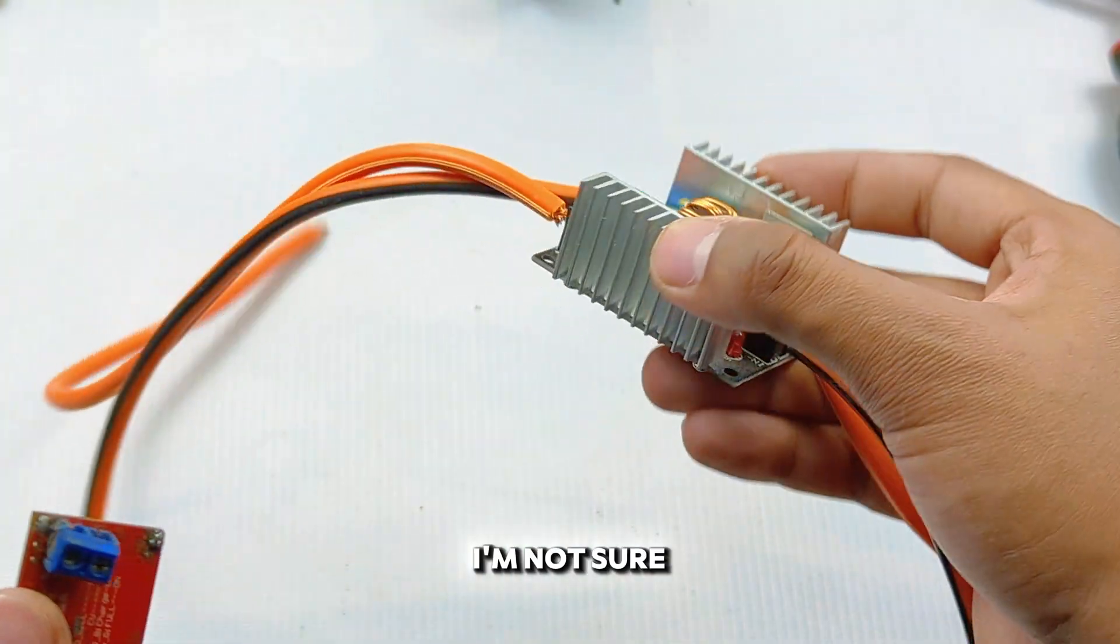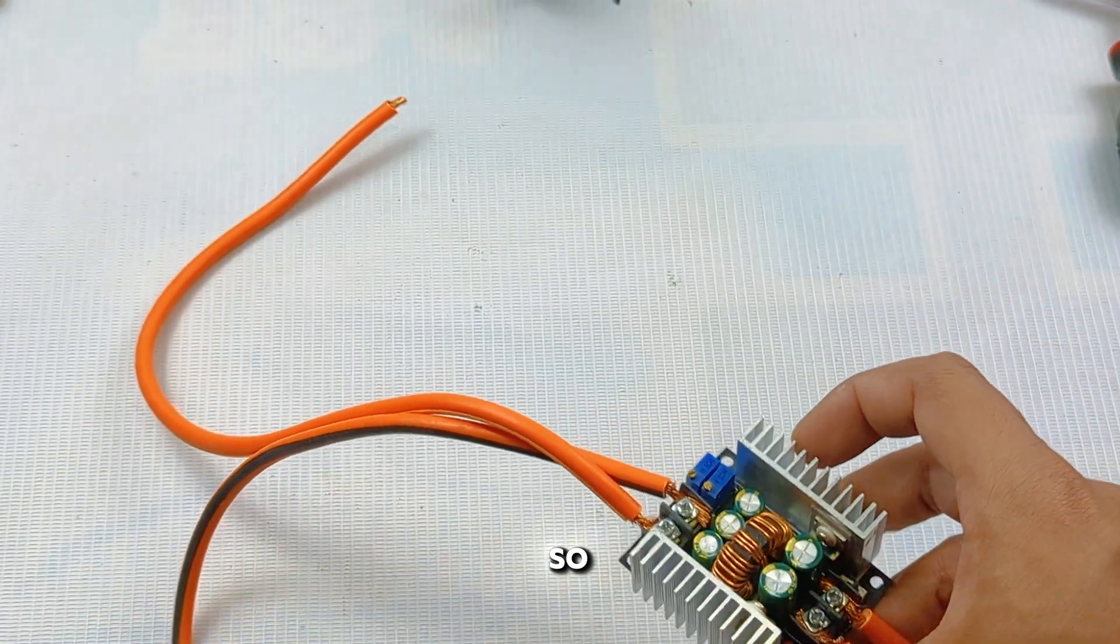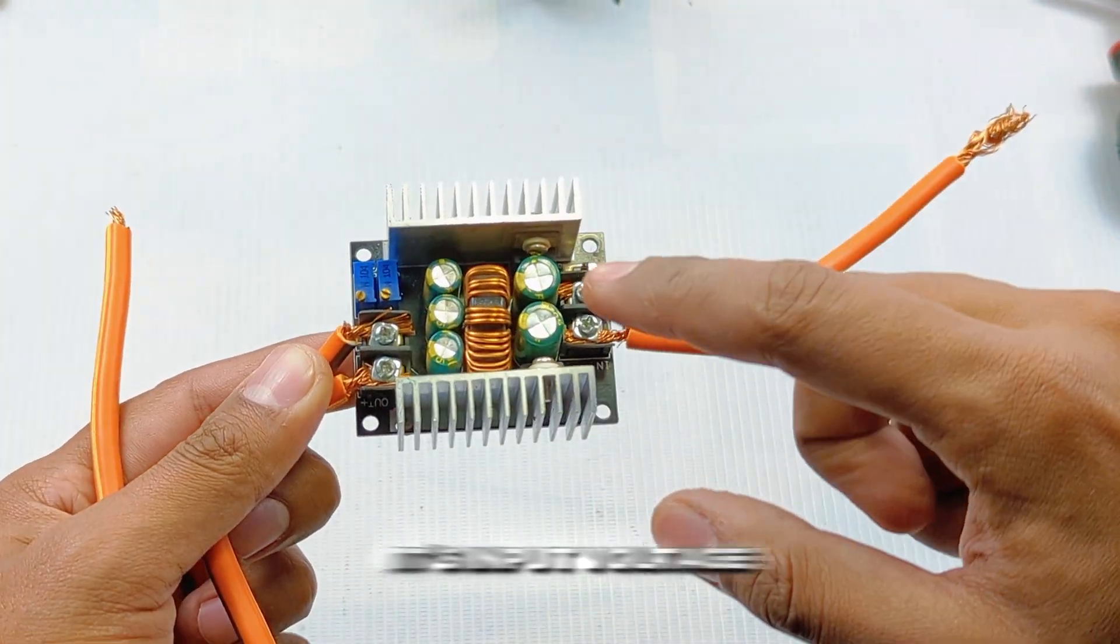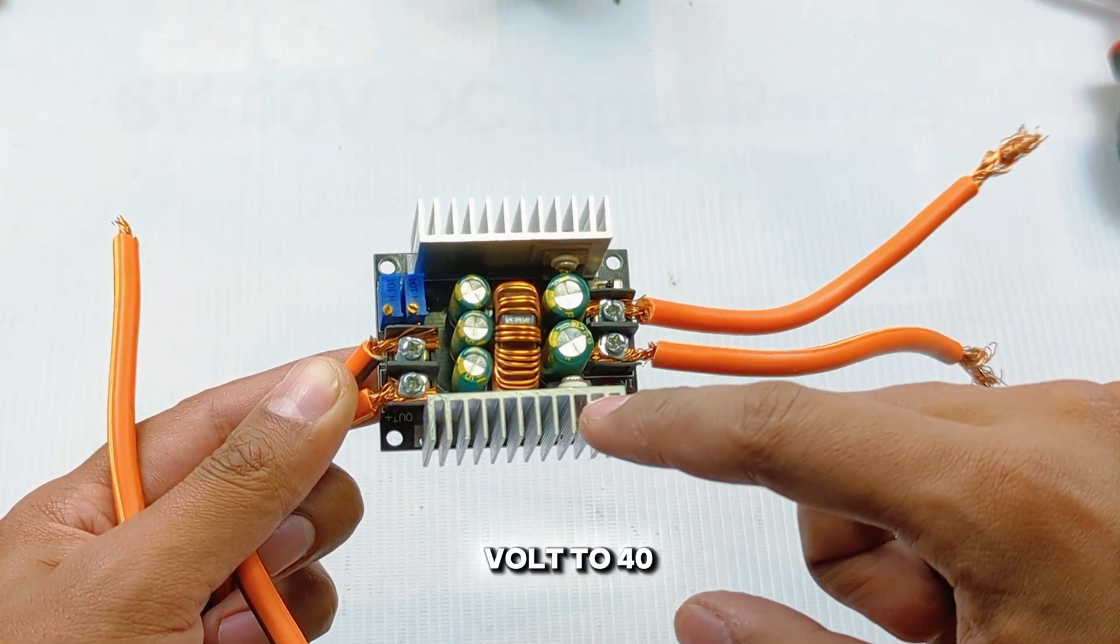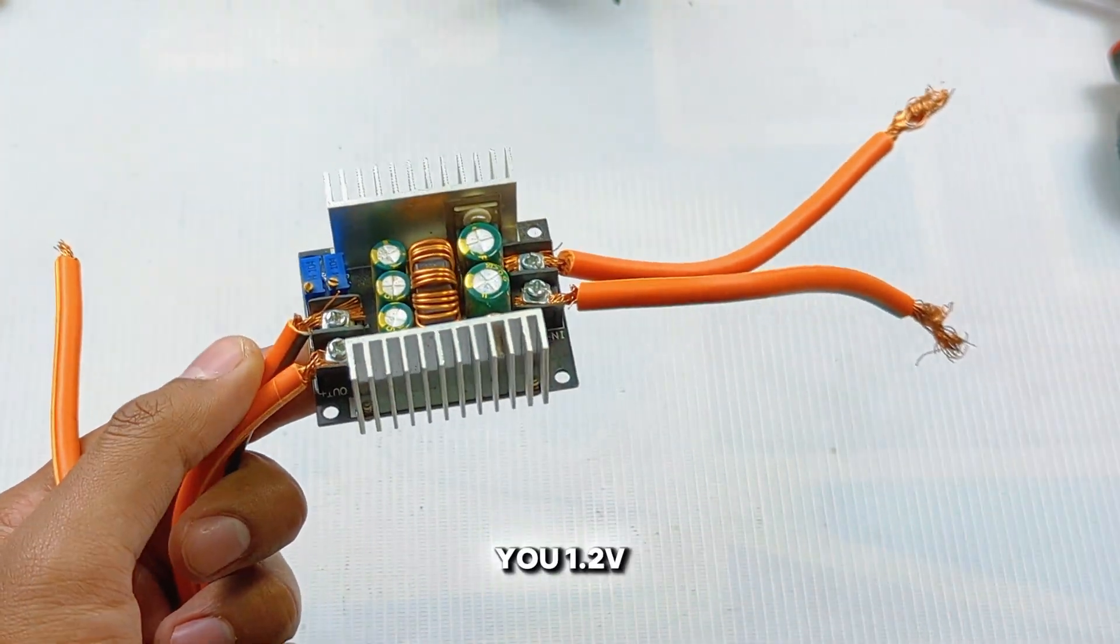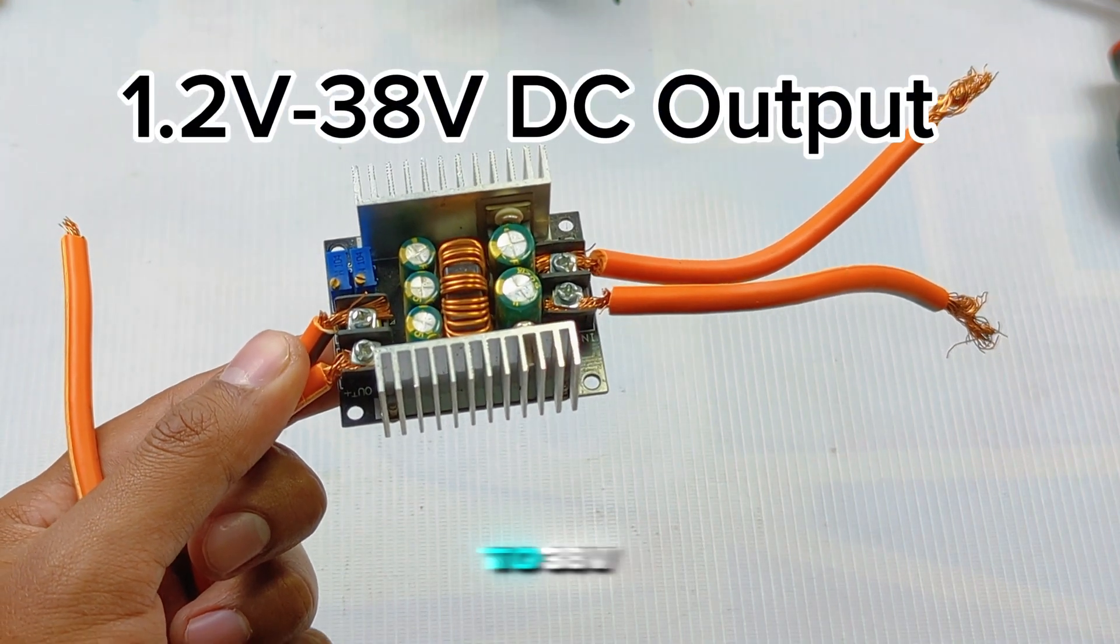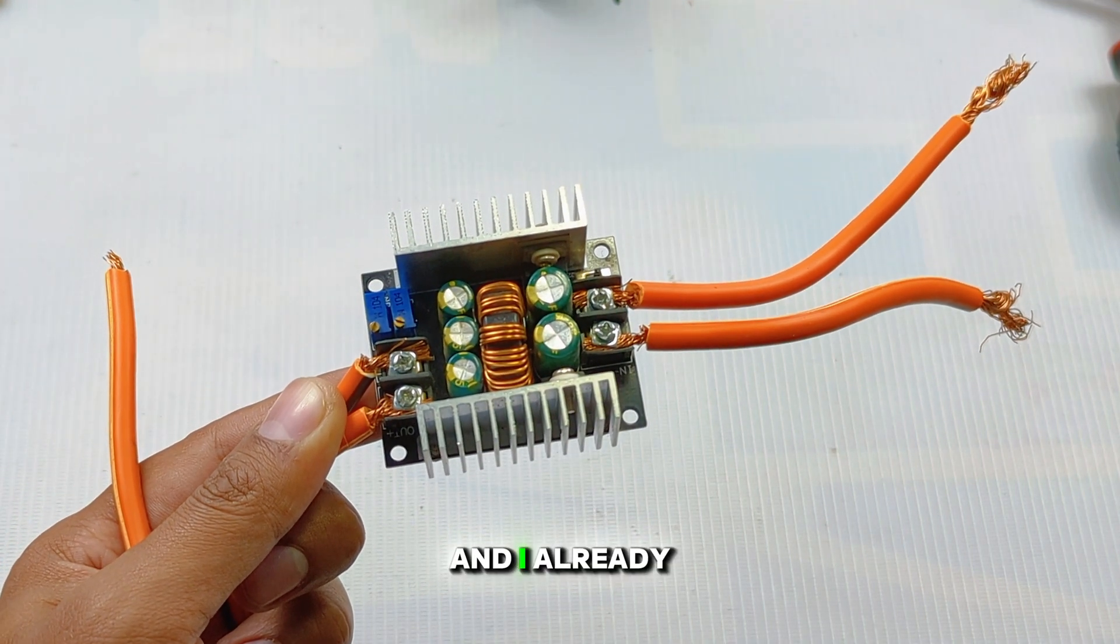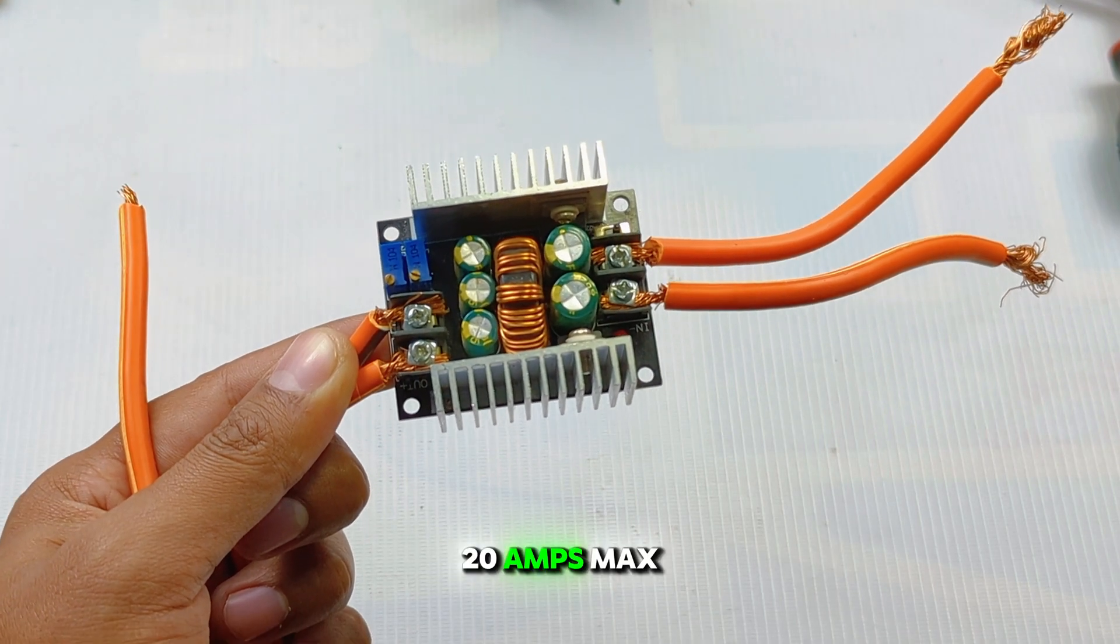First, let's talk about its input voltage. The input voltage range is from 6 volts to 40 volts DC max, and at the output it will give you 1.2 volts to 38 volts. As I already told you, it can handle 20 amps max.